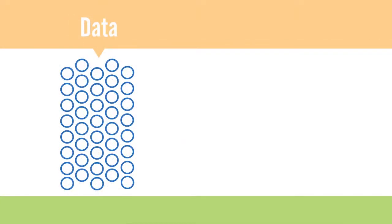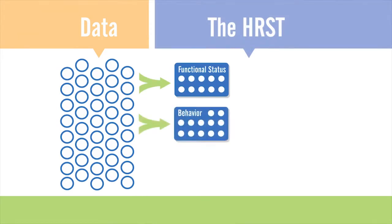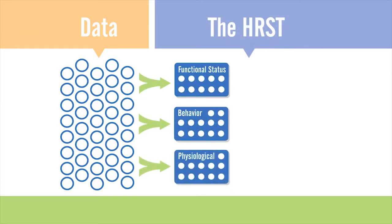As the trained HRST rater answers the yes or no questions about each of the 22 rating items in relation to the person, the HRST begins to align and organize all of that information into categories: functional, behavior, physiological, safety, and frequency of services. The HRST then assigns a score which tells the team where attention should be placed. The higher the score, the more risk or destabilization has been detected. The HRST takes information that may have once been overwhelming and assigns a weighted score, allowing attention to be placed specifically on the items that pose the greatest risk.